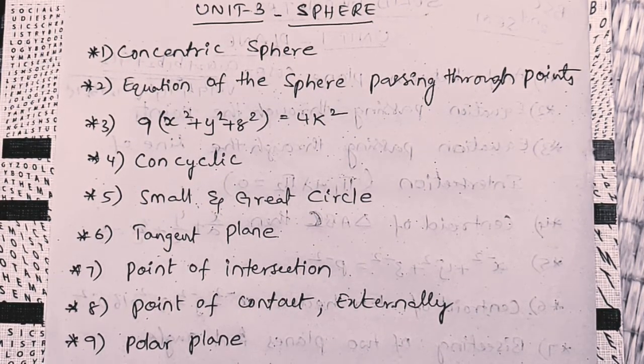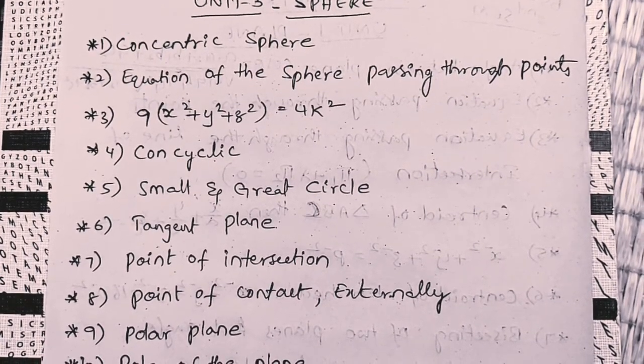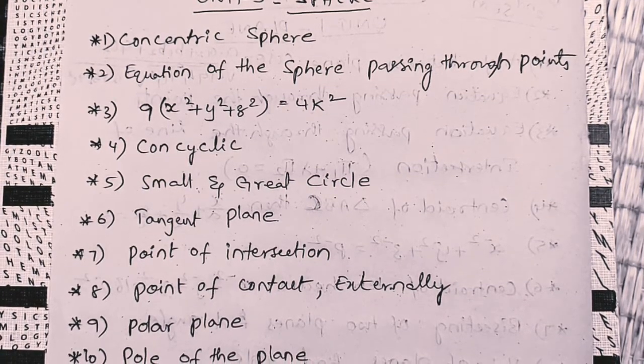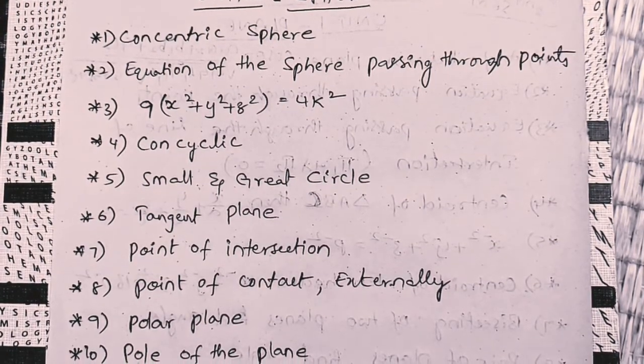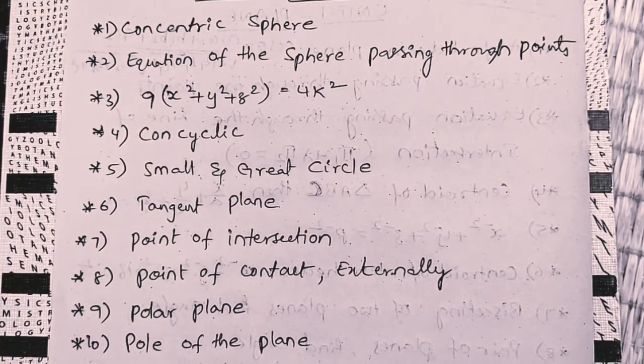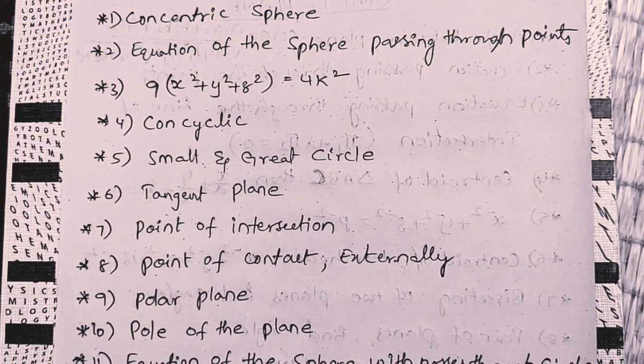So, this is the concept. Concyclic, tangent plane, point of contact externally. Concyclic, point of intersection, point of contact. So, 100% these 3 concepts. Next, pole of the plane.